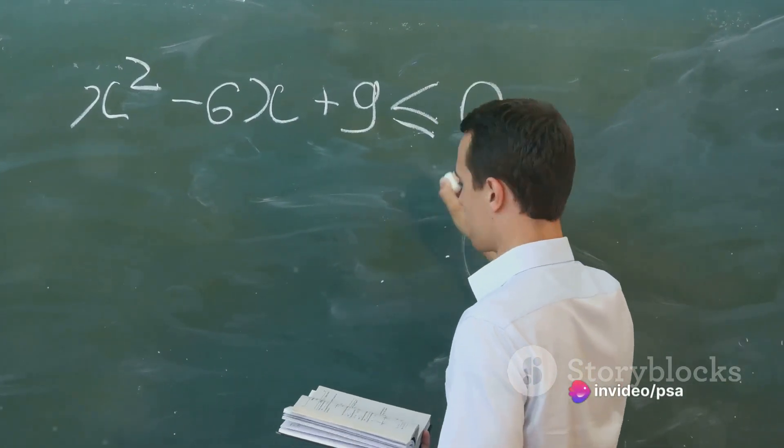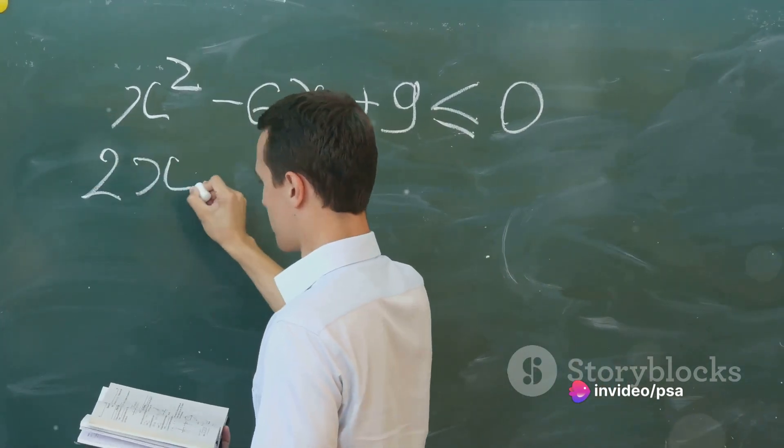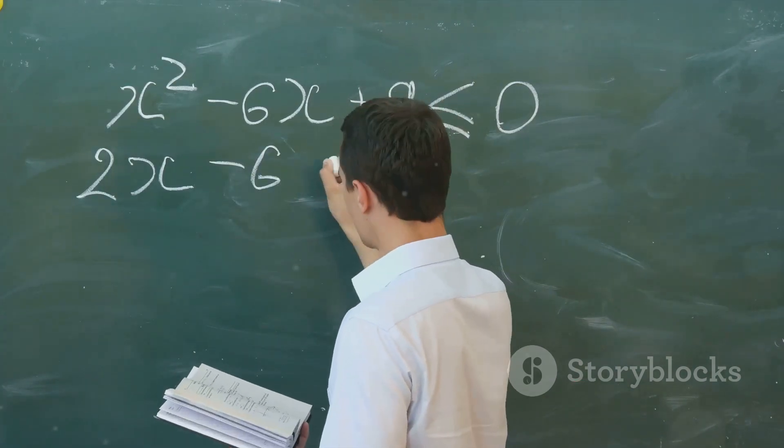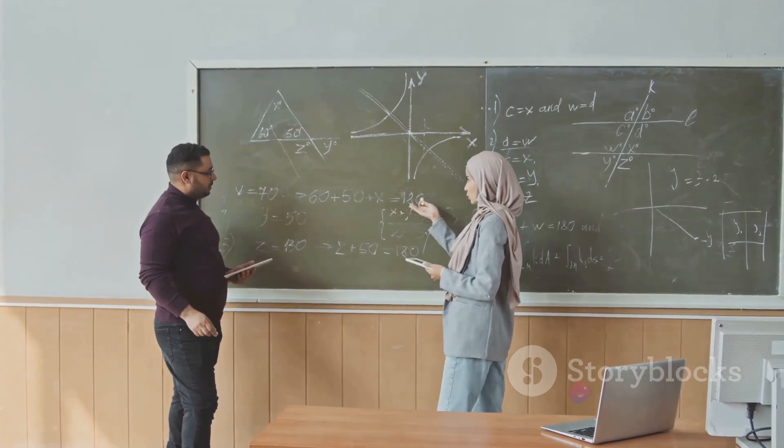In simpler terms, if you were to make a square with each side of the triangle, the area of the biggest square would be exactly the same as the combined areas of the two smaller squares. It's a beautifully simple concept, but its implications are far-reaching.